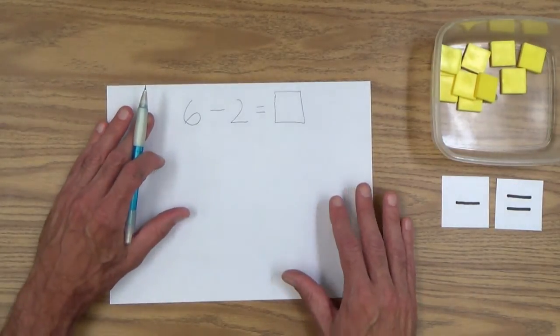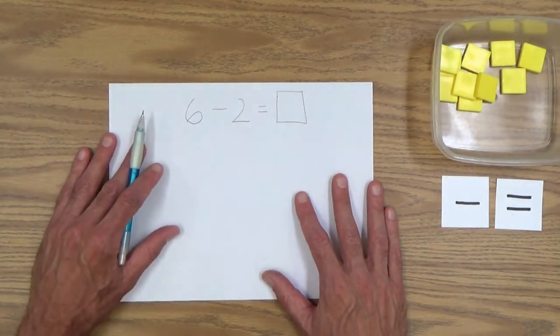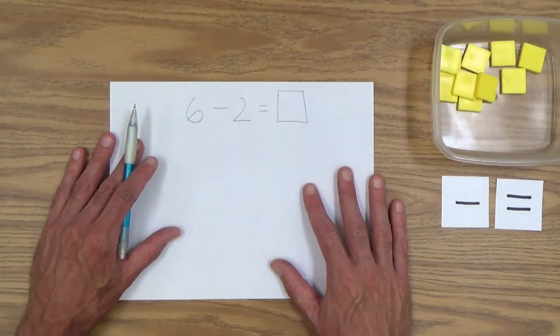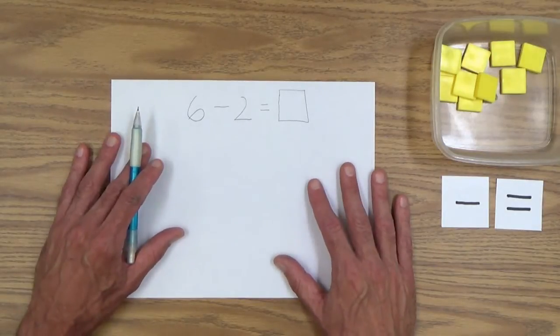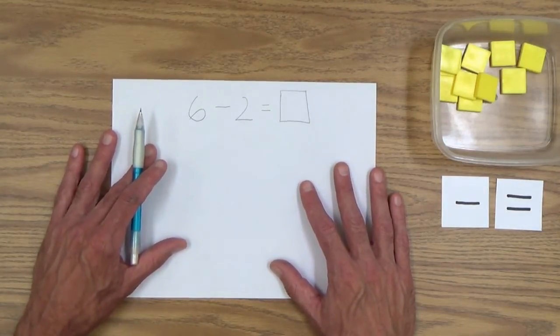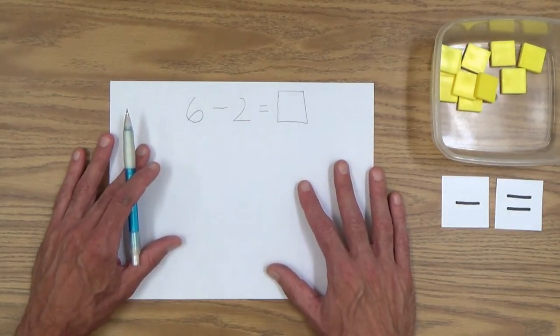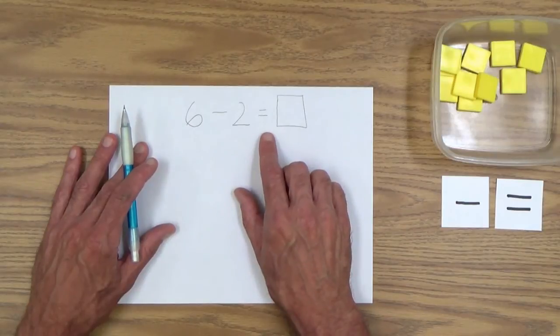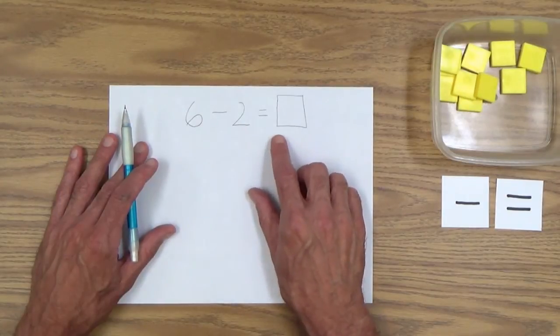So you might want to do a few more number stories and switch, let her take the lead. Let her, in fact, let him or her make up the number stories, write out the equations until you can see as the teacher that they really understand what we're doing here. It's no longer addition. We're no longer adding quantities together. We're taking one quantity away from another quantity. And of course, remind them that we call this an equation because it has an equal sign in there. So that's how we'll start.